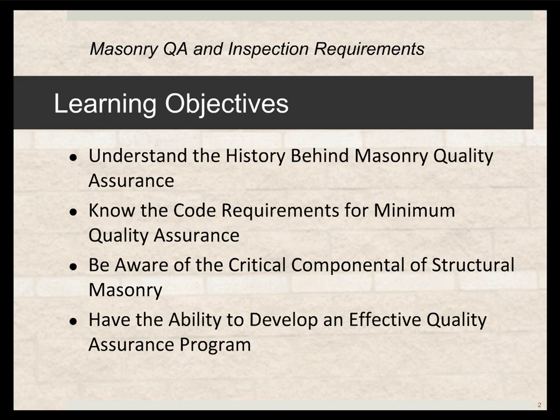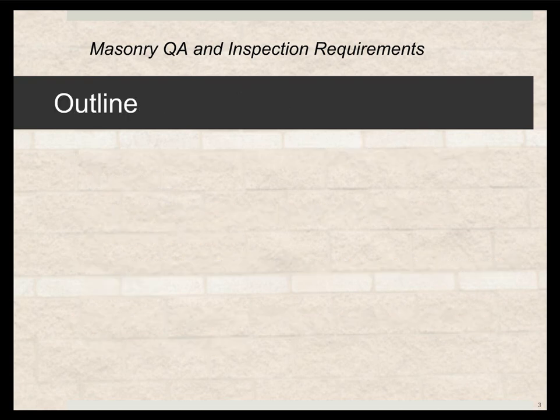Then we need the ability to develop an effective quality assurance program. The code now requires us to develop and post a quality assurance program for the project, but that's a lot easier done than it seems. There are already tables in the code — all you have to do is reference those tables and there's your quality assurance program. It's not something you have to develop individually; you just reference the project to a particular part of the table, and I'm going to show you how to easily do that.